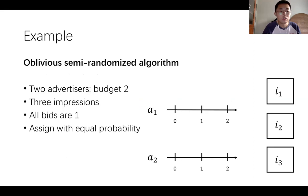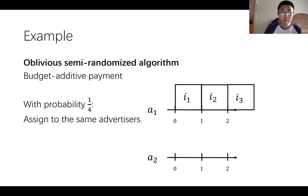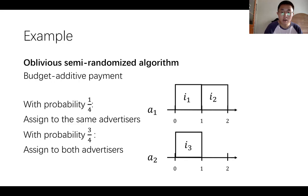Here is an example to show how the two formulations behave in an oblivious semi-randomized algorithm. Consider an instance with two advertisers and three impressions. Each advertiser has a budget of two and each impression is assigned to two advertisers with equal probability, with all bids equal to one. In the budget-additive payment, with probability 1 over 4 all impressions are assigned to the same advertiser and the objective is 2; otherwise they are assigned to both advertisers and the objective is 3. So the expected objective equals 11 over 4.